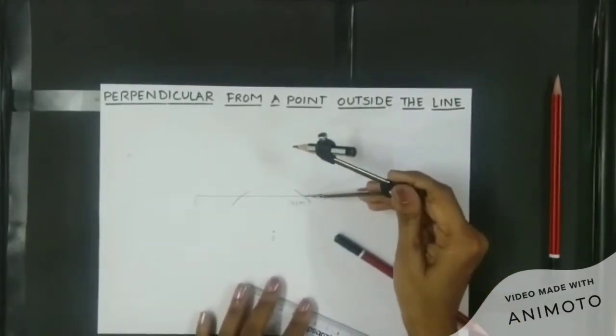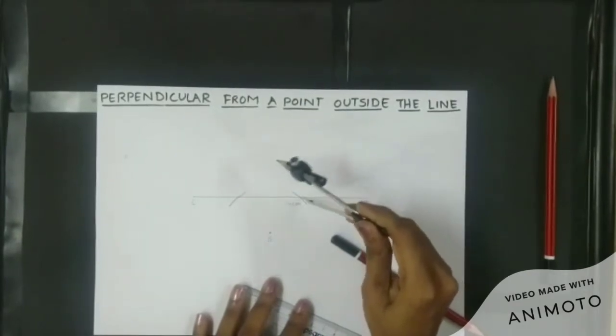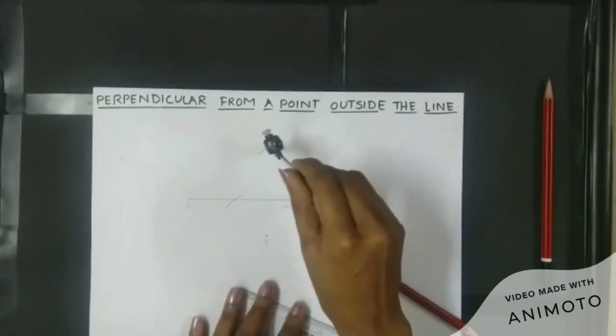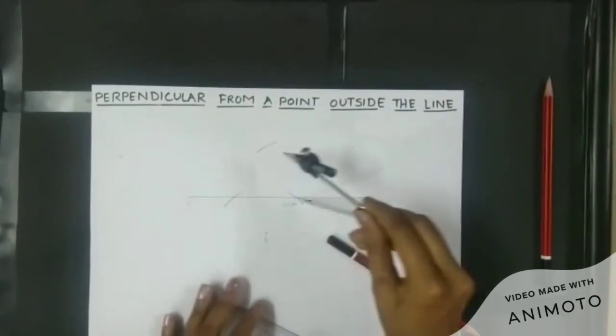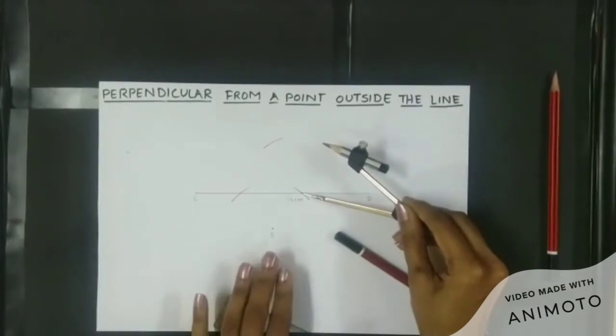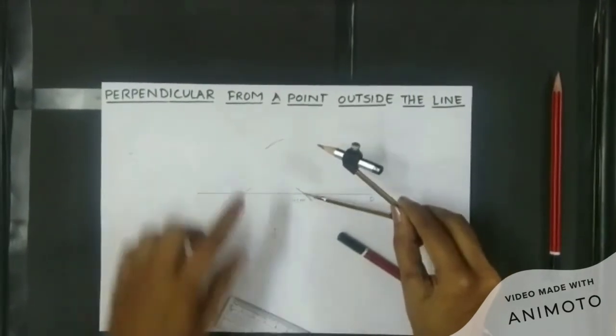And make an arc above the line segment CD. This time we do not have to make any arcs in the other part of the line segment CD. We only have to make the arc on the above side.